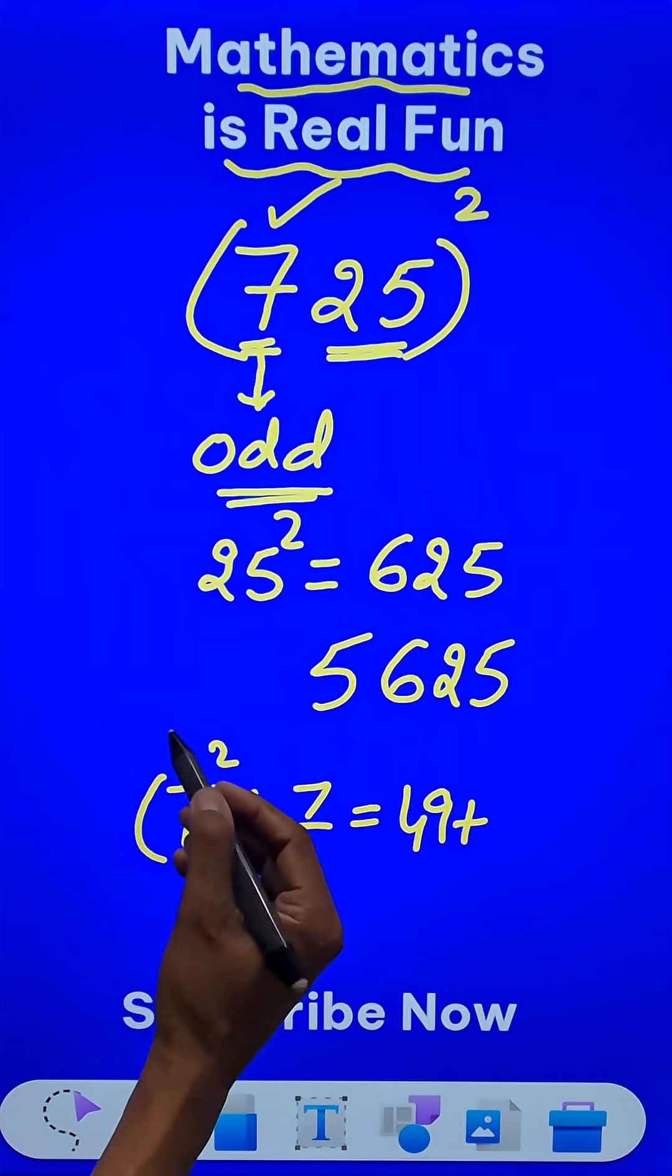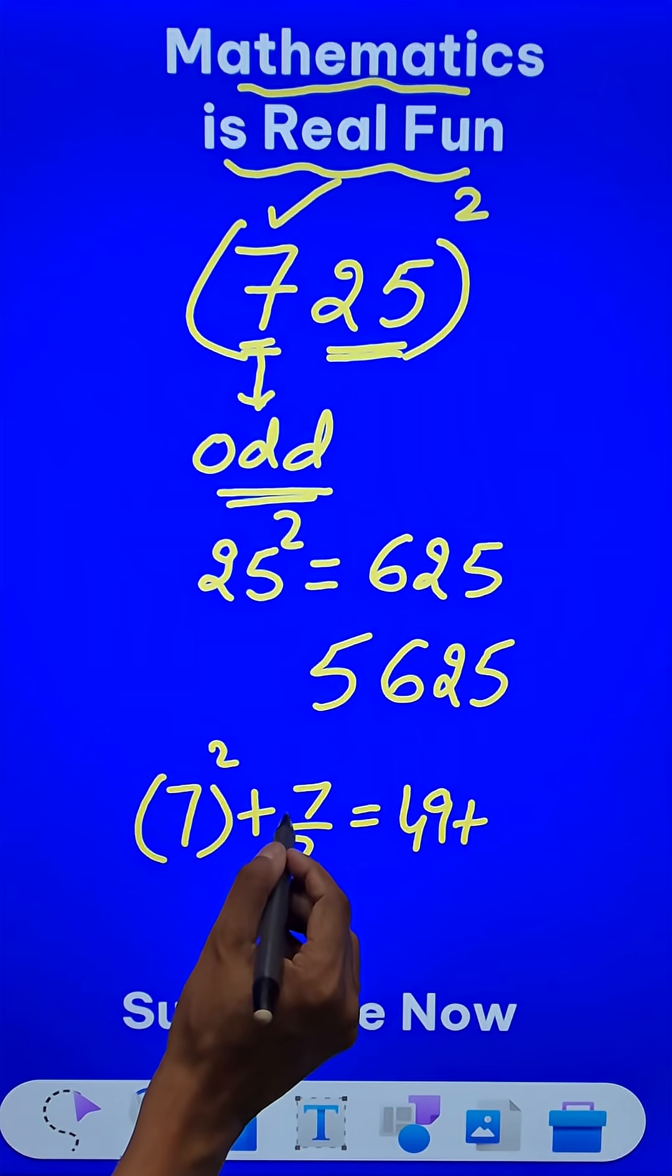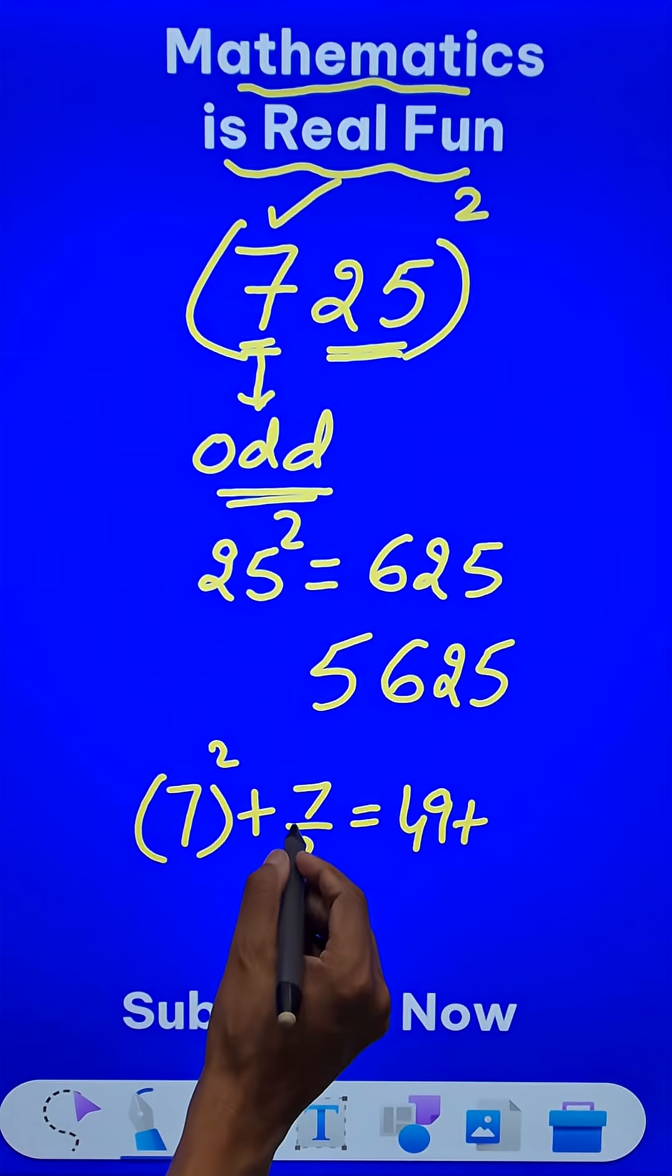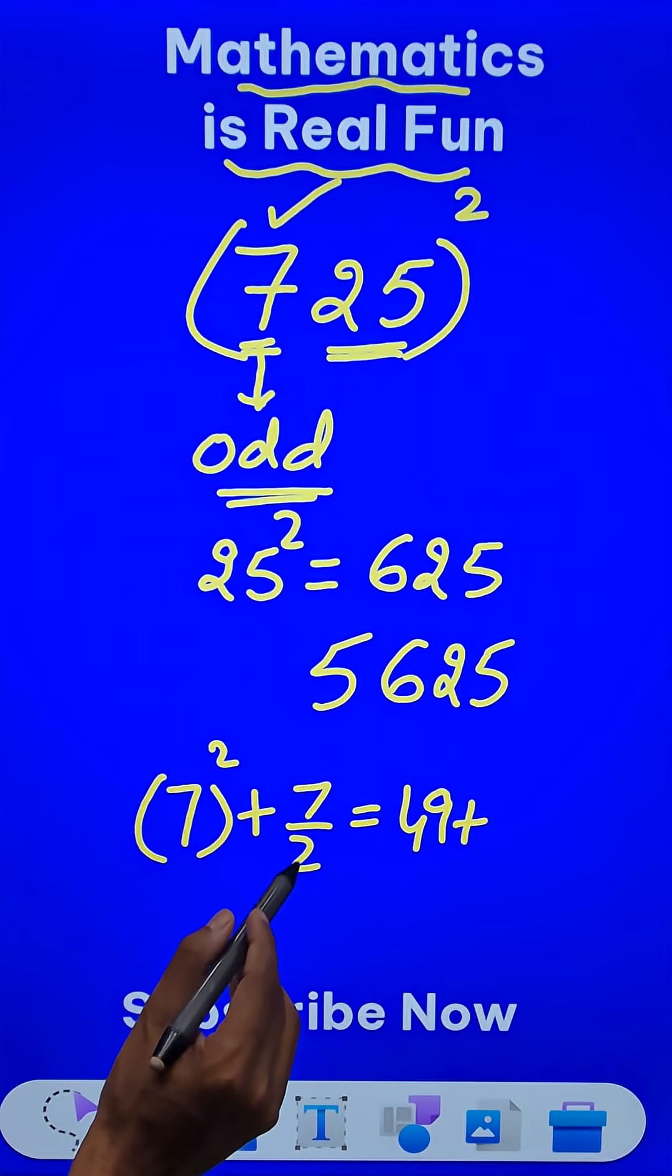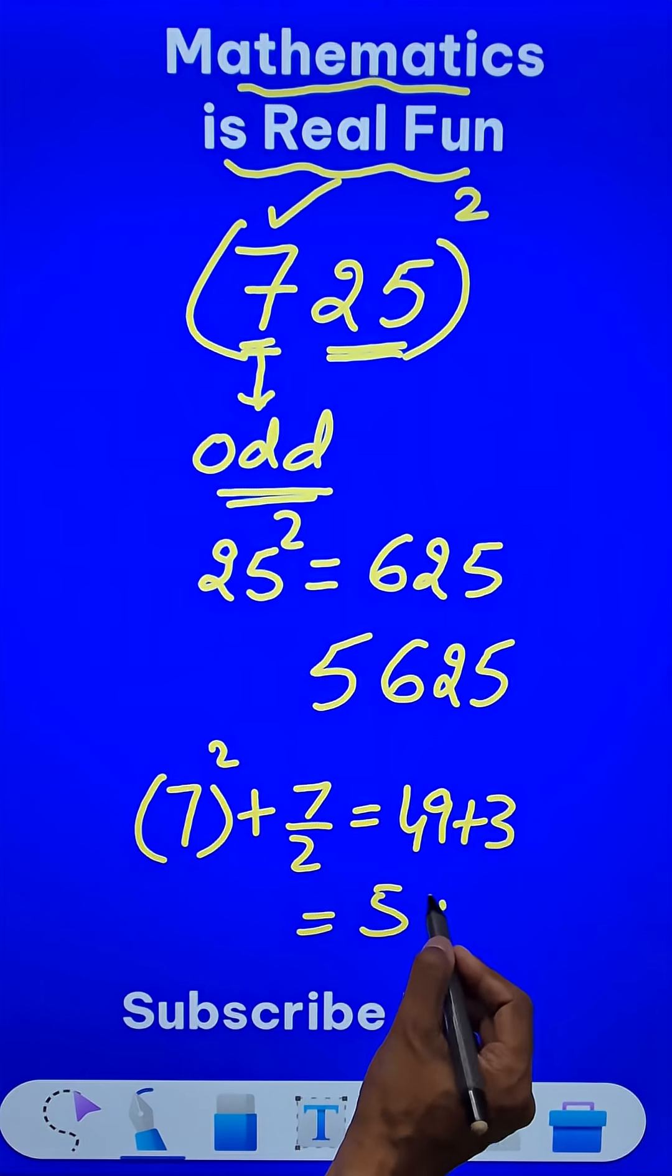7 divided by 2 is 3.5, but I am not going to consider the decimals. I am going to take only the whole number part. What is the quotient when you divide 7 by 2? It is 3. So we get 52.